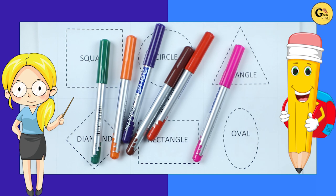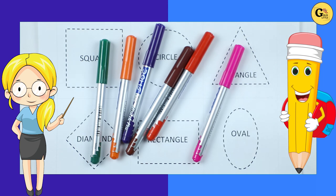Which shape is this? Square, circle, triangle, diamond, rectangle, oval.